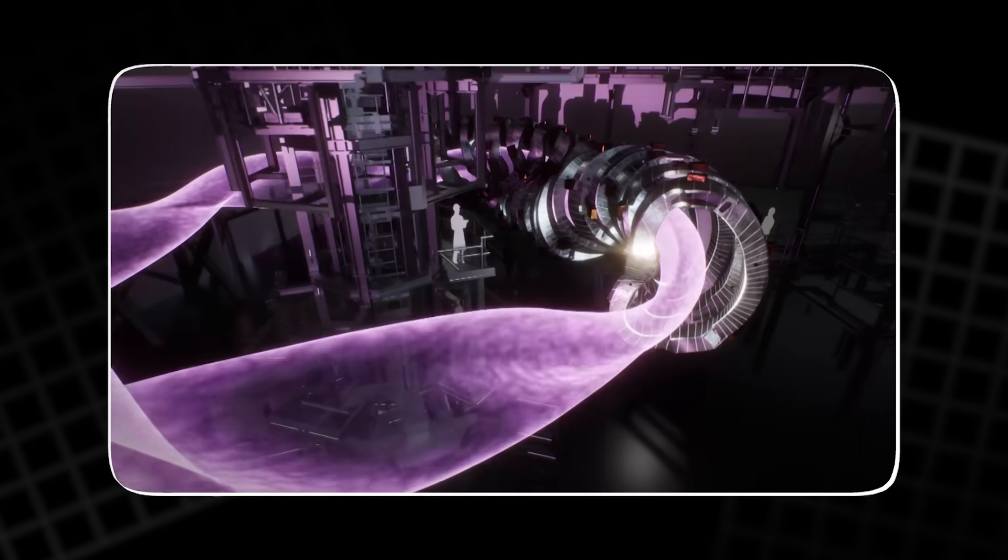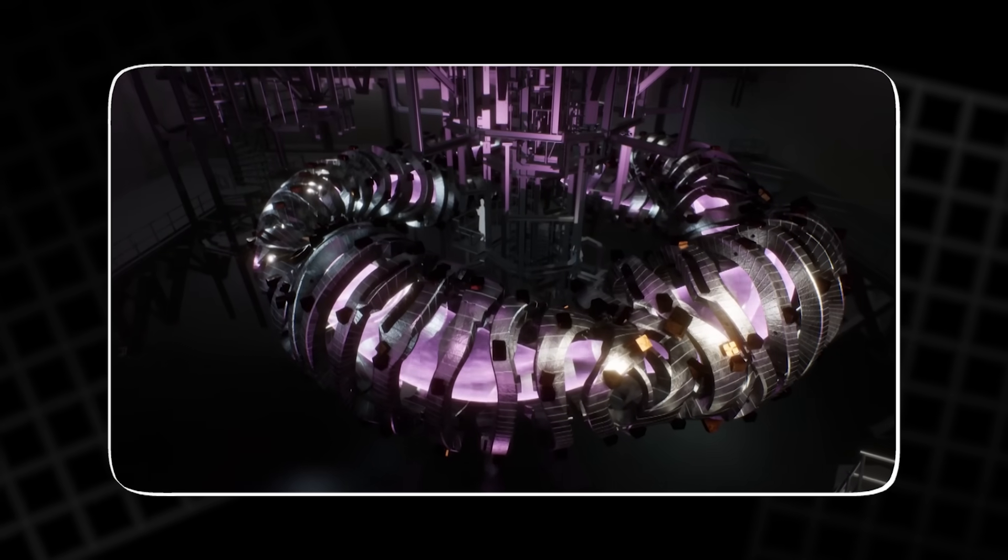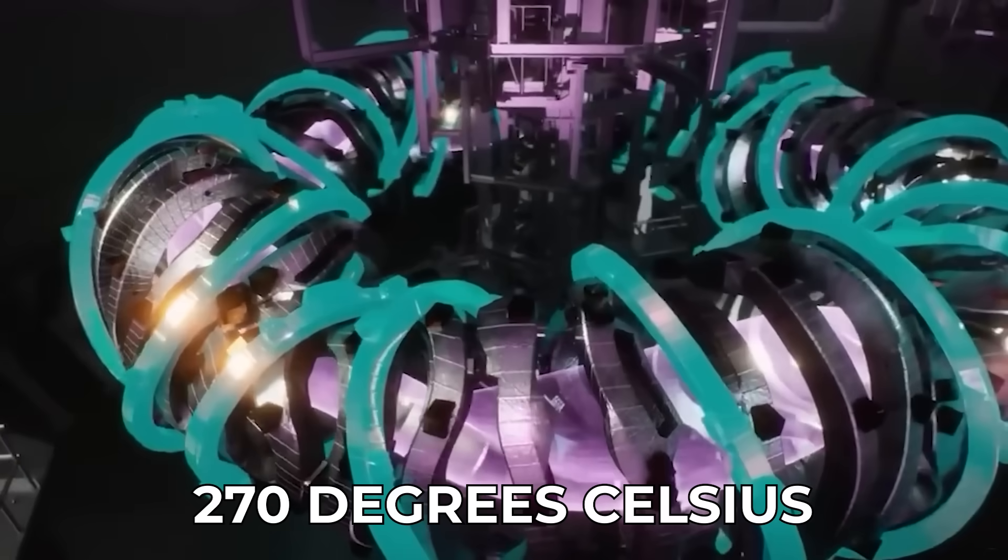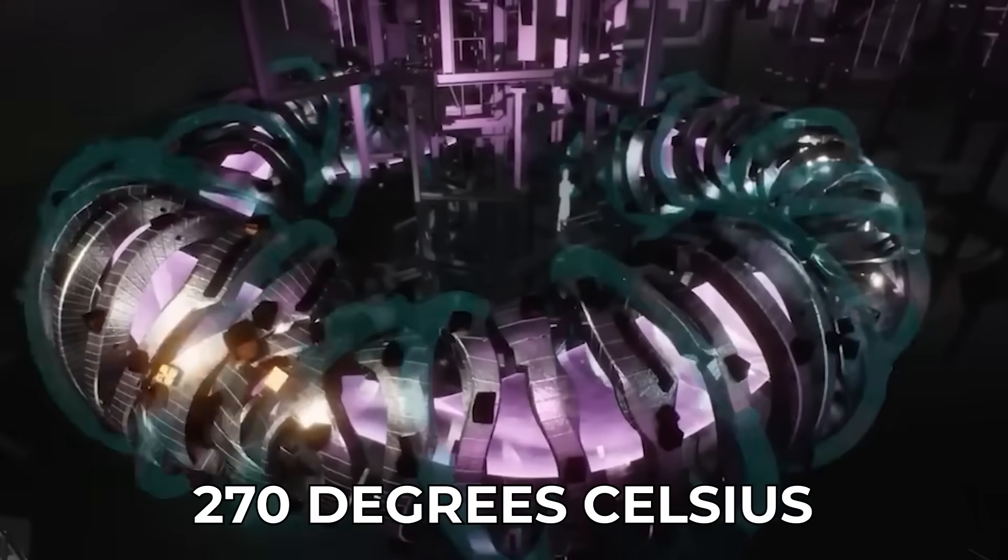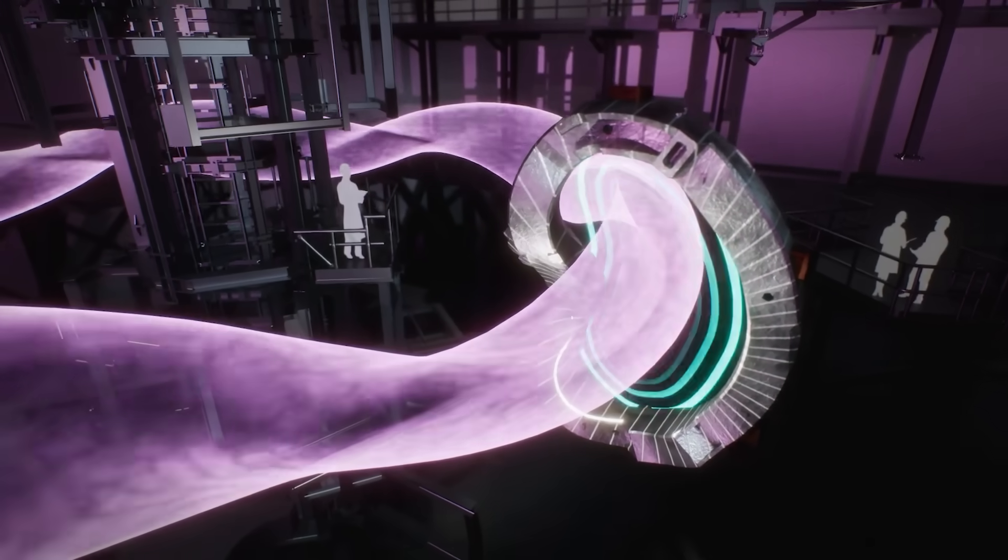It uses 50 superconducting magnets, each with a unique bent shape, to build a magnetic tunnel in space. The magnets sit near minus 270 degrees Celsius, colder than deep space, while the plasma inside can reach over 20 million degrees, sometimes higher.